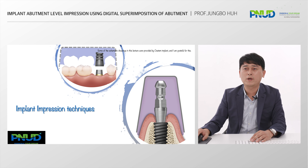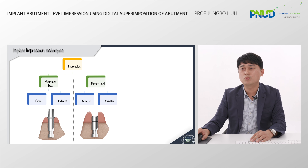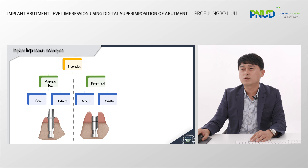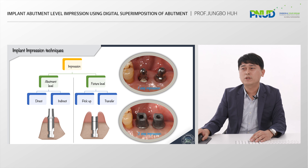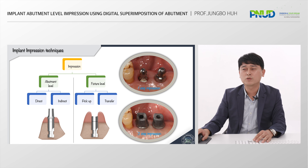Before proceeding to my main lecture, I would like to discuss implant impression techniques. As you know, implant impression techniques can be classified into two broad categories. The first is the method of obtaining an impression at the abutment level, and the second is the method of obtaining an impression at the fixture level. Both of these methods have advantages and disadvantages, but I'm making the final prosthesis by obtaining an impression at the fixture level first, and then making or selecting an abutment and retaking the abutment-level impression.